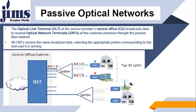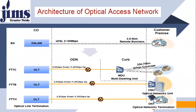The optical line terminal OLT at the service provider's central office broadcasts data to several optical network terminals at the customer premises through the passive fiber network. All ONTs receive the same broadcast data, selecting the appropriate portion corresponding to the end user it is serving. This is the architecture of the optical access network, showing OLT, FTTC, FTTP, and FTTS configurations through optical network terminations and optical fibers.